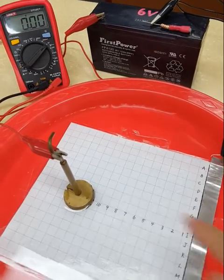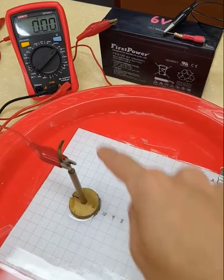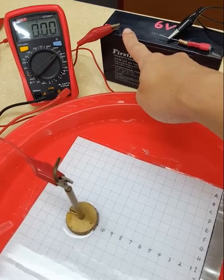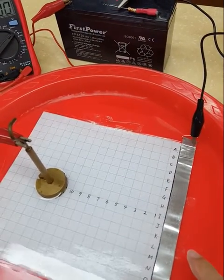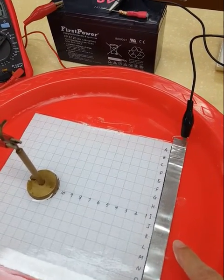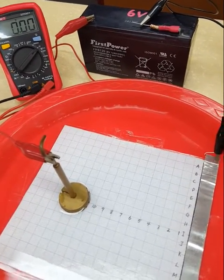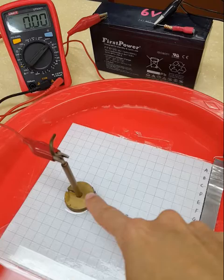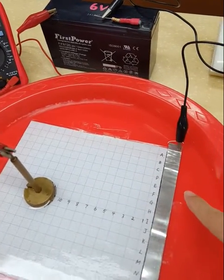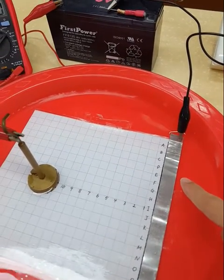Hello everyone, we have here a brass weight which is connected to the positive terminal of the battery and we have an aluminium strip here which is connected to the negative terminal. That makes the brass weight positively charged and the aluminium strip negatively charged.